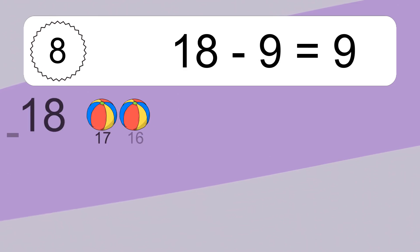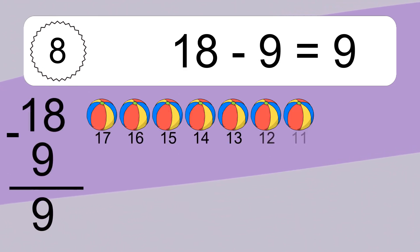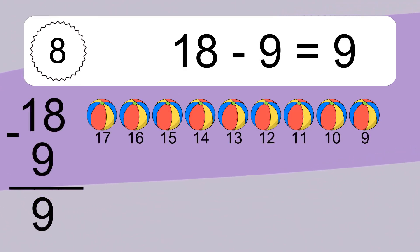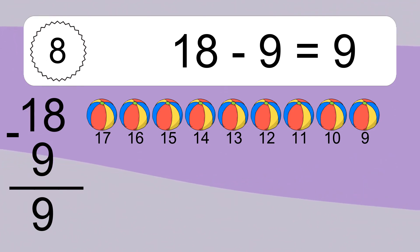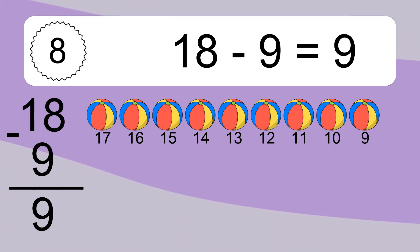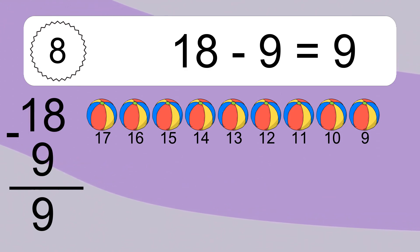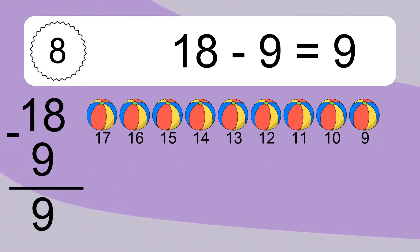18 minus 9 equals what? 18 minus 9 equals 9. Let's count it! 17, 16, 15, 14, 13, 12, 11, 10, 9.